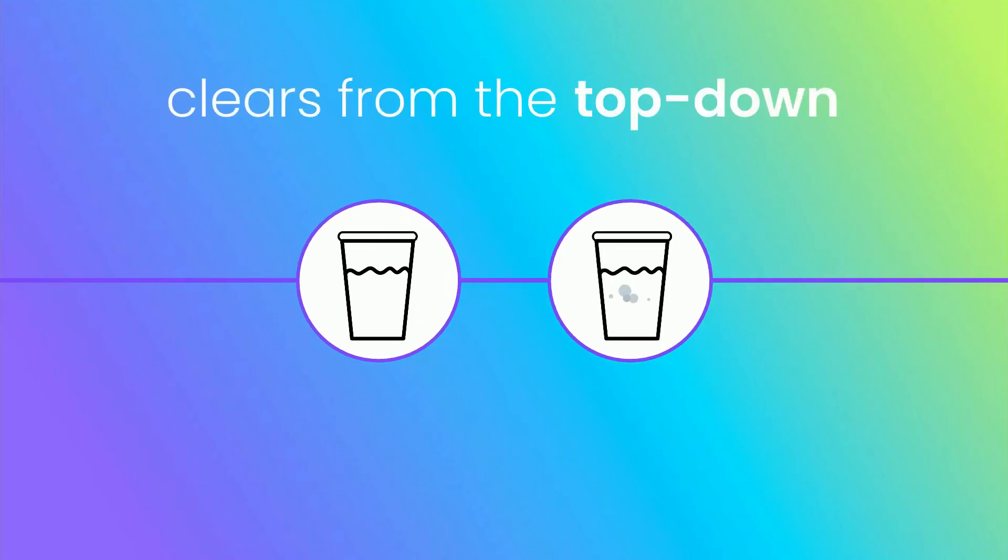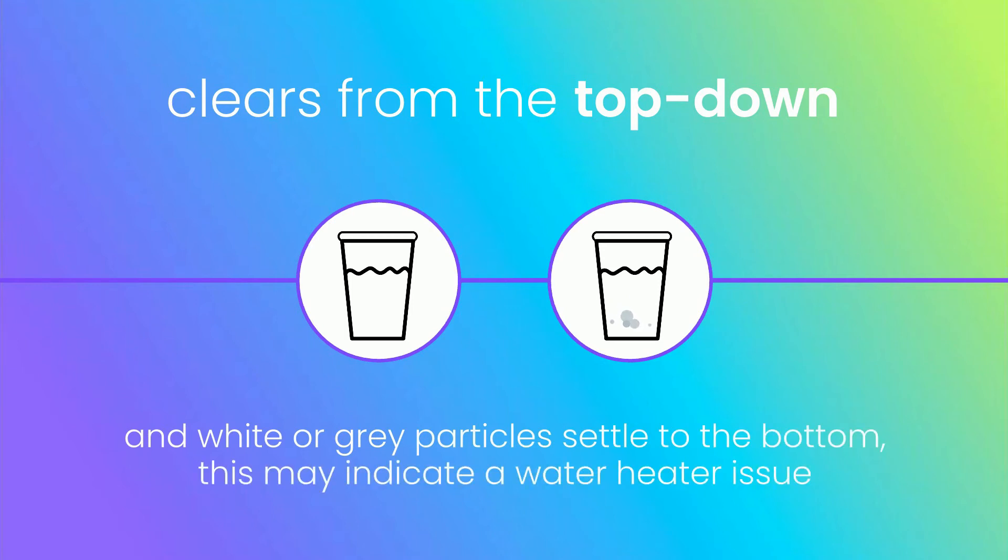However, if the water in the glass clears from the top down and white or gray particles settle to the bottom, this may indicate a water heater issue.